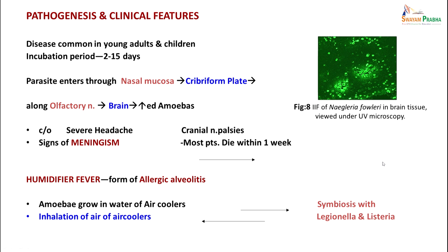Pathogenesis: disease is commonly seen to occur in young children and young adults, with an incubation period of 2 to 15 days. The parasite enters through the nasal mucosa, goes to the cribriform plate, along the olfactory nerve to the brain, causing increased amoeba formation which destroys brain tissue. The patient will have severe headache, signs of meningism, possible cranial nerve paralysis, and may die within a week. Naegleria fowleri has also been implicated in humidifier fever, a form of allergic alveolitis, often occurring in symbiosis with Legionella and Listeria in air coolers.